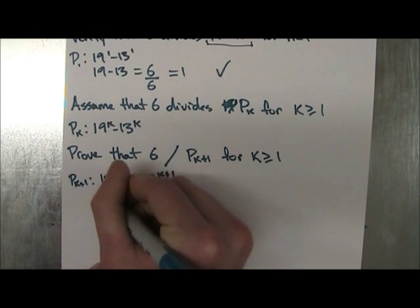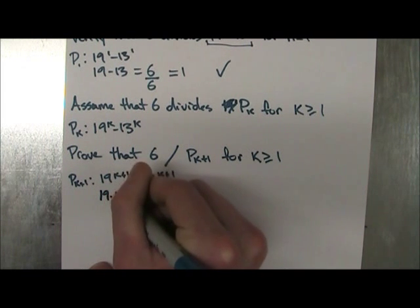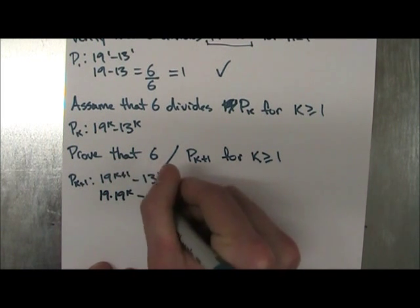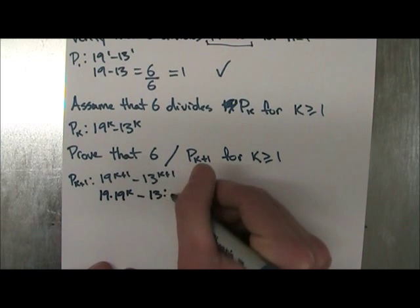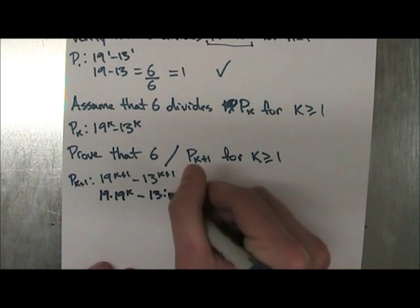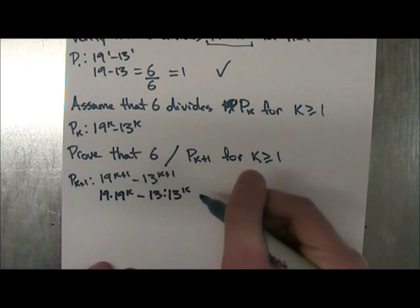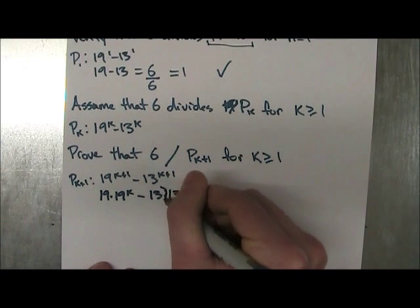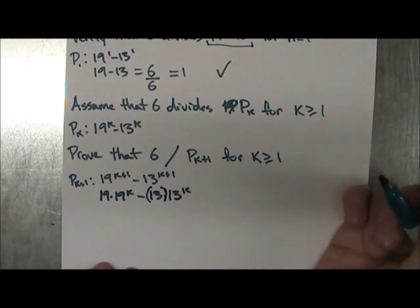we can actually do 19 times 19^k minus 13 times... Shoot, I didn't want to put that double dot. Just ignore it. That's times. We'll do parentheses or something. Times 13^k.